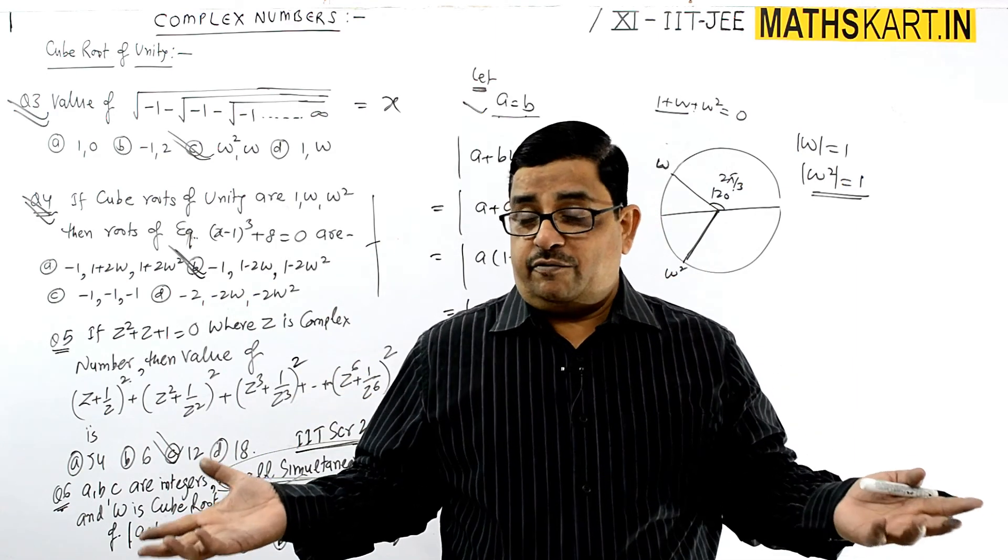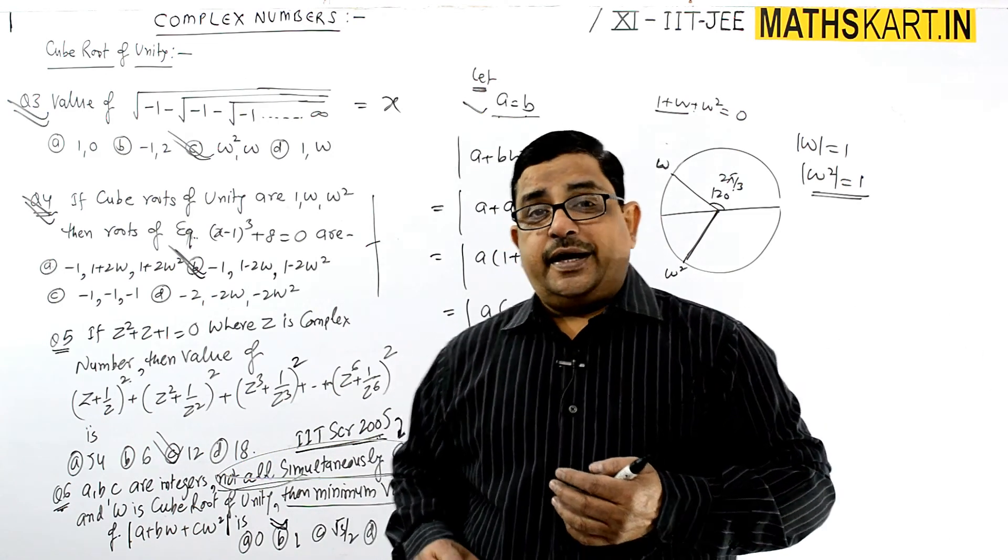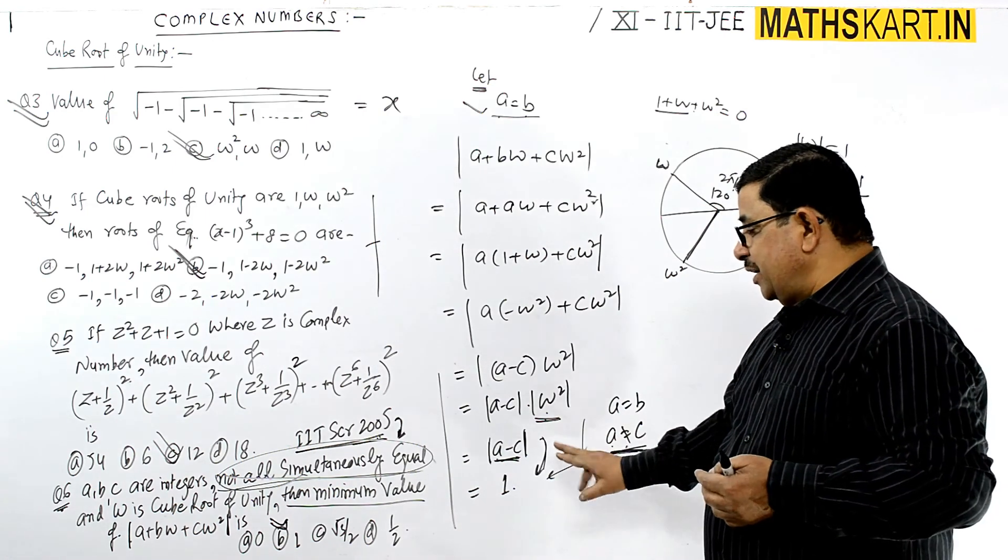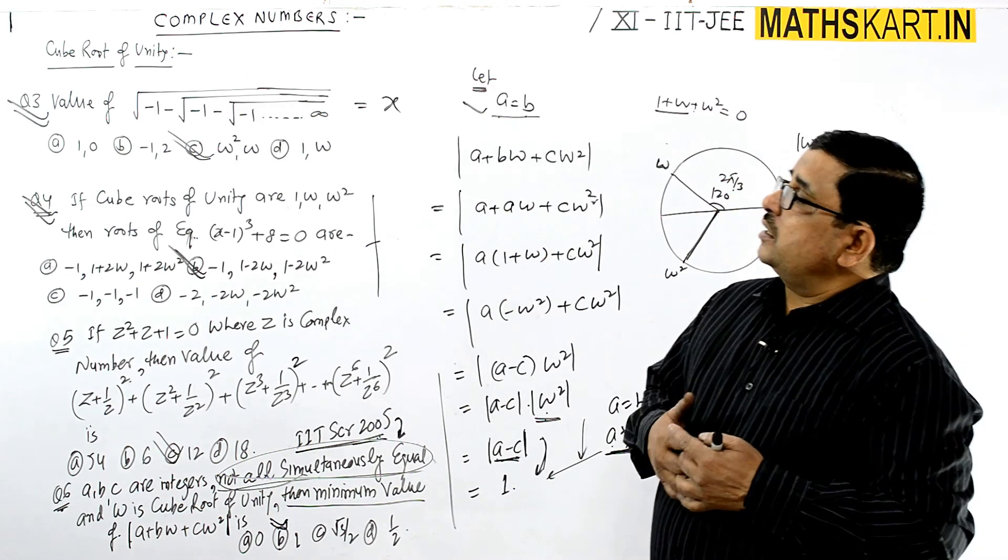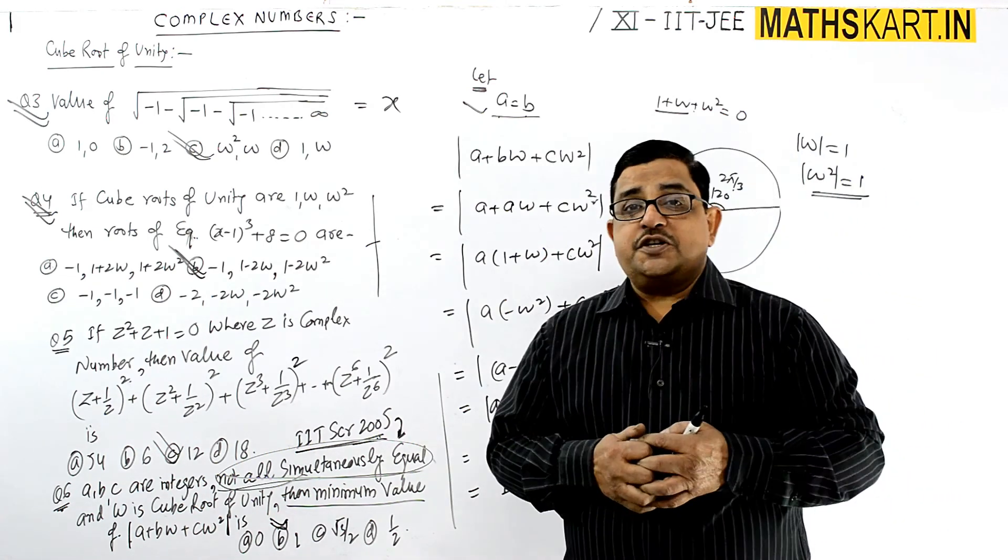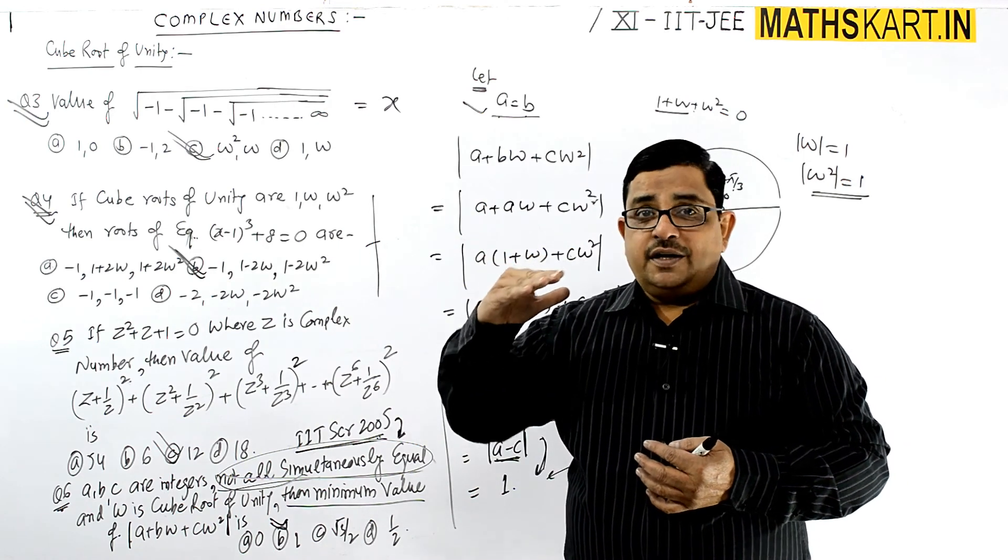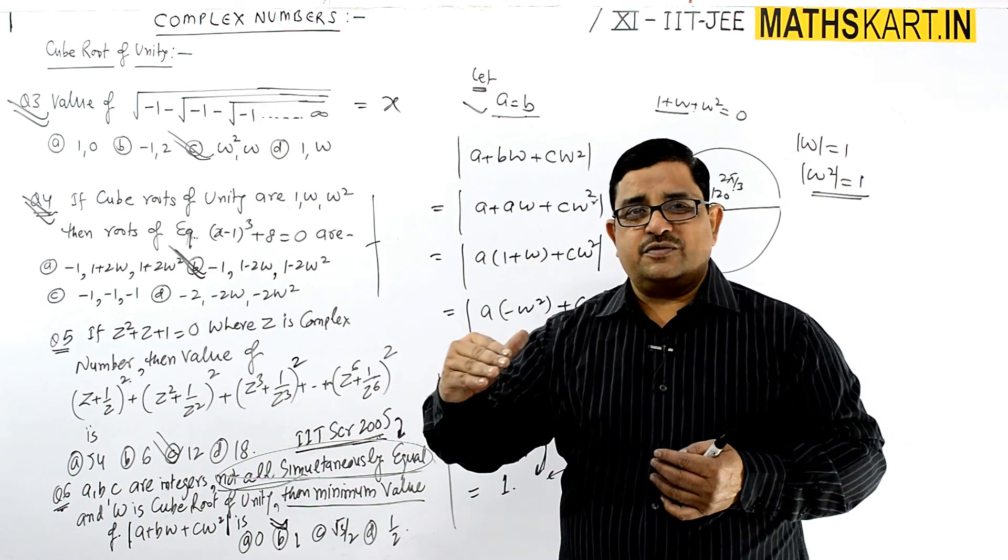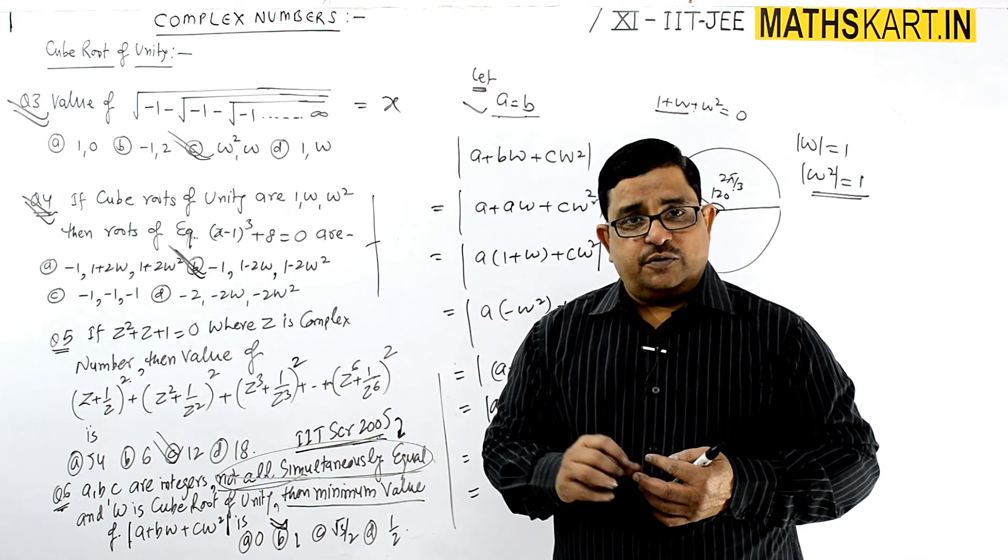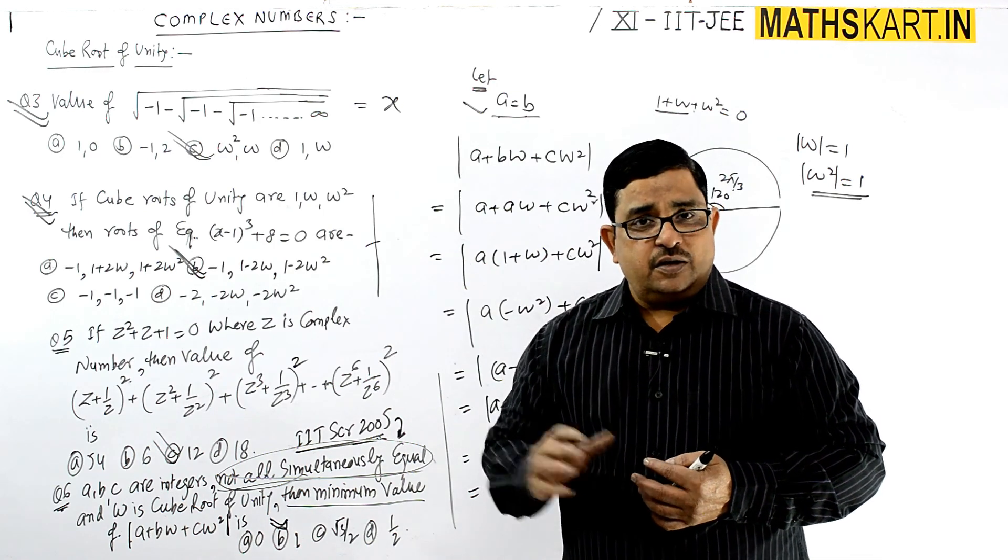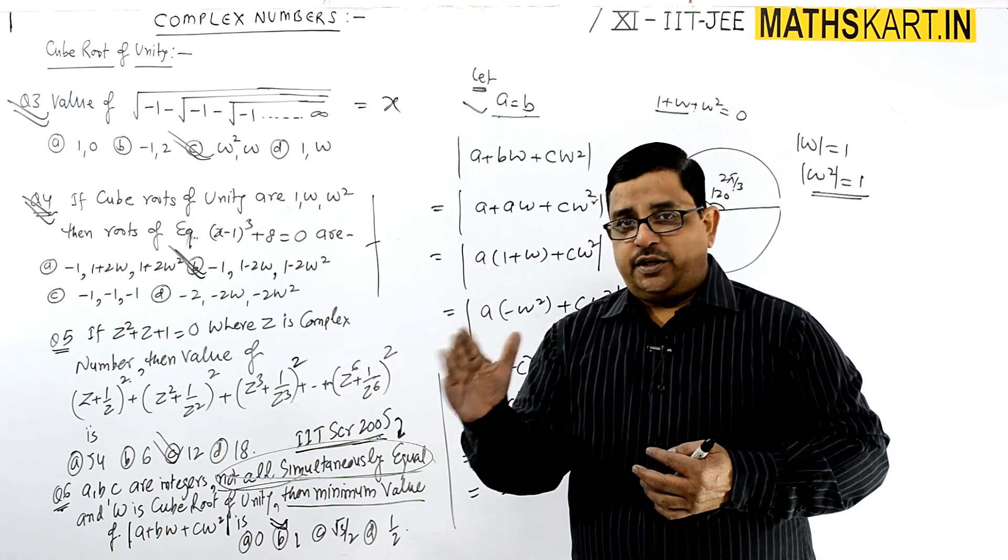This is the representation of a complex number: geometrical representation, polar representation, and exponential form - that is Euler's exponential form. Different representations of complex numbers will be covered in the next part.